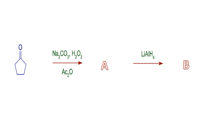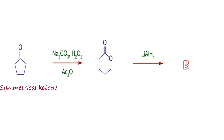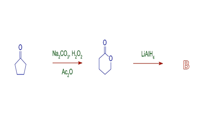This cyclopentanone in the presence of hydrogen peroxide undergoes Baeyer-Villiger oxidation to form this lactone. The ketone is symmetrical, so methylene migration to oxygen on either side will form the same lactone. Esters, when reduced with lithium aluminium hydride followed by hydrolysis, give alcohol.